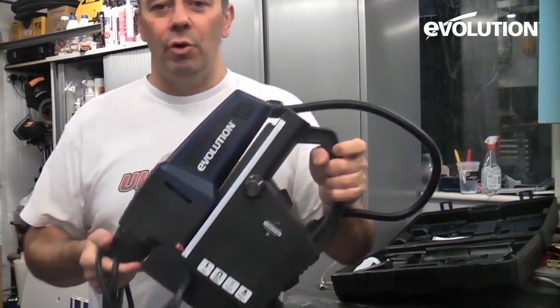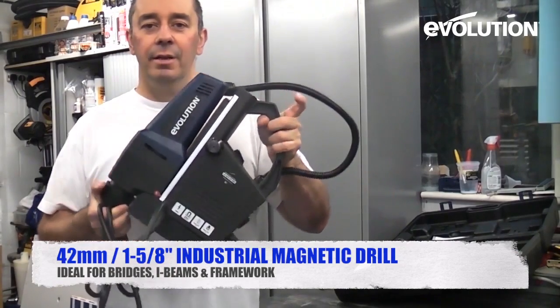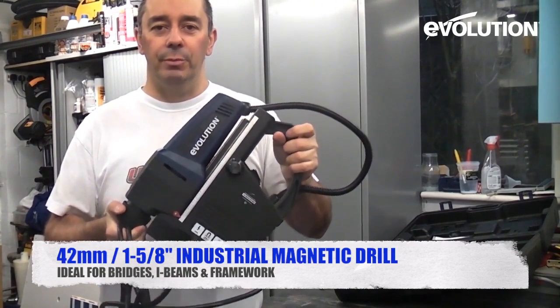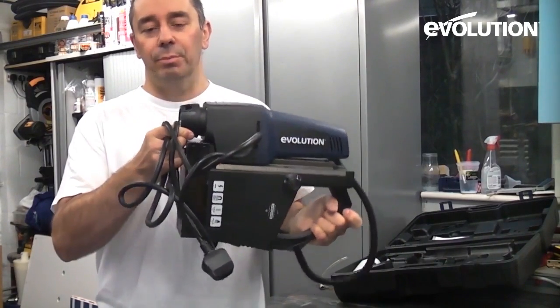This is the Evolution Evo Mag 42. This is a magnetic base drill that can cut up to 42 millimeter holes in metal quite easily using the supplied cutters.